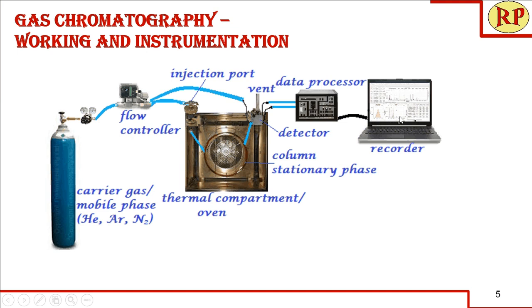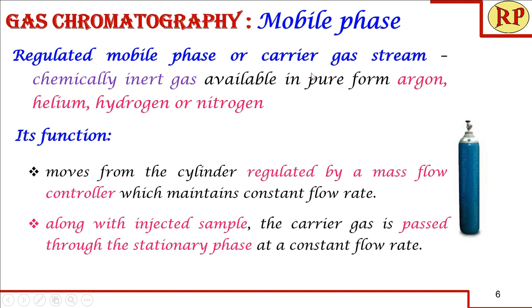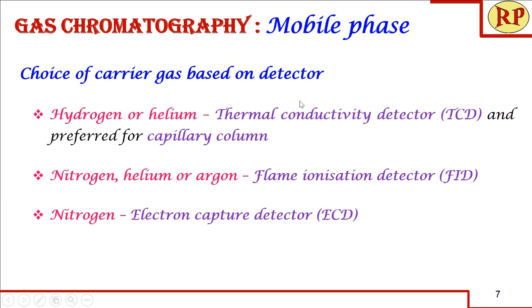Now we will move on to each component in detail. The mobile phase, also called the carrier gas, is a chemically inert gas — argon, helium, hydrogen, or nitrogen — which moves into the column at a constant flow rate set using the flow controller. The choice of carrier gas depends on the detector: hydrogen or helium is suitable for TCD; nitrogen, helium, or argon for FID; and nitrogen for ECD.